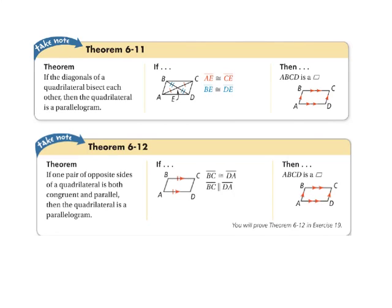Here are two more theorems that will help us prove a quadrilateral is a parallelogram. Theorem 6-11 states that if the diagonals of a quadrilateral bisect each other, then the quadrilateral is a parallelogram. Theorem 6-12 states that if one pair of opposite sides of a quadrilateral is both congruent and parallel — it has to be both — then the quadrilateral is a parallelogram.